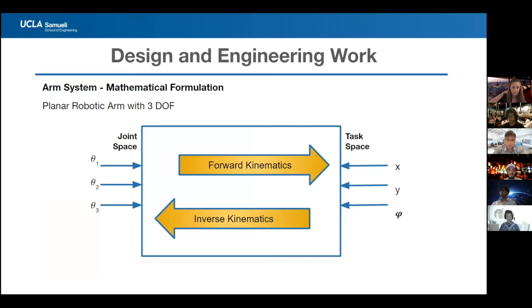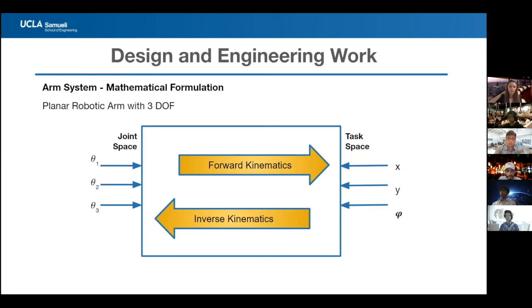The BusserBot's robotic arm has three degrees of freedom. The position of all three links is specified by variables theta1, theta2, and theta3 — a 3×1 vector — defining joint space. The space where the end-goal target resides is called task space. Inverse kinematics maps task space to joint space by calculating joint angles given end effector coordinates. Once joint angles are obtained, they are used as input to actuate the joints. Forward kinematics then maps joint space back to task space so the arm's tip reaches the end effector coordinates.